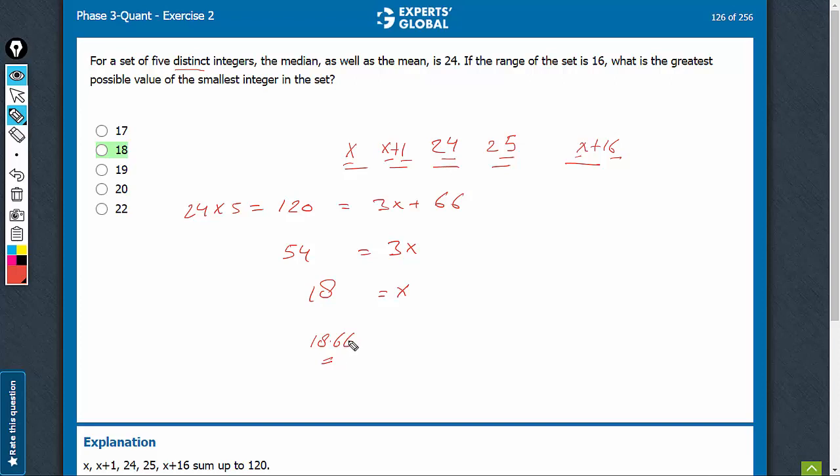So while rounding it off, don't think that which side is nearer. You have to know that whatever number you have got is the highest possible number. Anything higher than that is not possible.